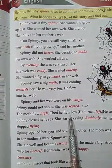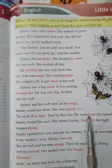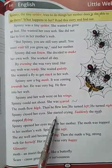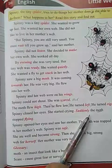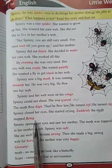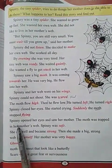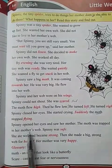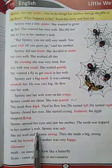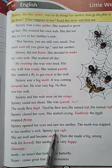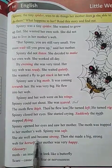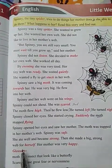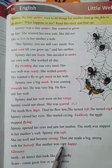The moth flew high, then flew low. He turned left, he turned right. Spinny closed her eyes and started crying. Suddenly the moth stopped flying. Spinny opened her eyes and saw her mother — the moth was trapped in her mother's web. Spinny was safe. She ate well and became strong, and then she made a big strong web for herself. Her mother was very happy.